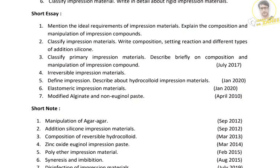The fourth point: the set impression should not distort or tear when removed from the mouth. The impression made from these materials should remain dimensionally stable at least until the cast can be poured. The sixth requirement is the impression should maintain its dimensional stability after removal of a cast, so that a second or third cast can be made from the same impression.